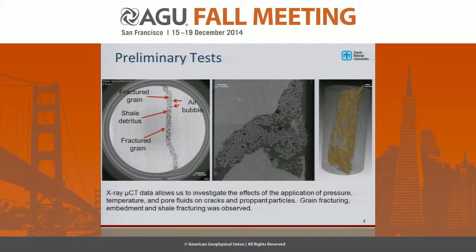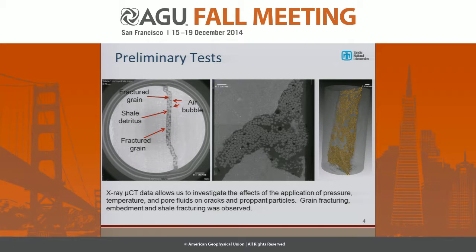Here are some CT results. If you look closely, we have air bubbles entrained in there, which is partly an artifact of how the specimens were produced. We see shale wall pieces that have sloughed off and float around, and some fractured grains, all contributing to reduced porosity. We also see swelling of the shale wall, which is a little more difficult to see without showing a full series of images.